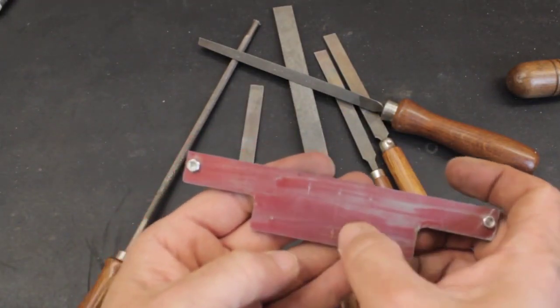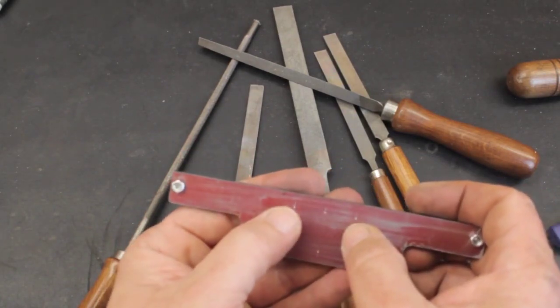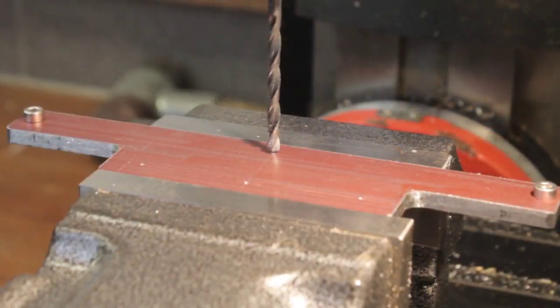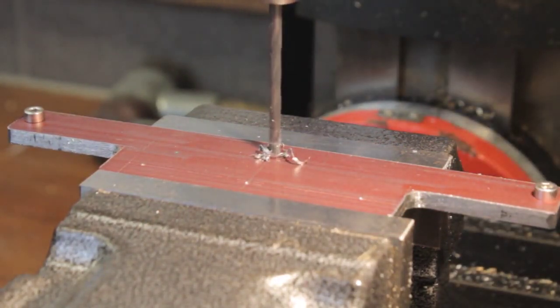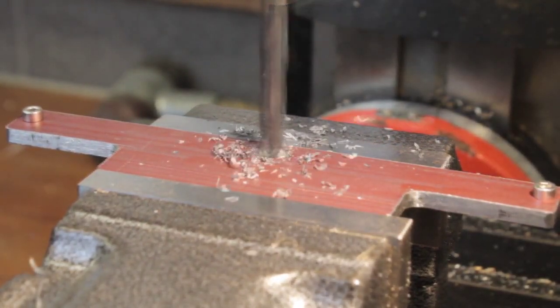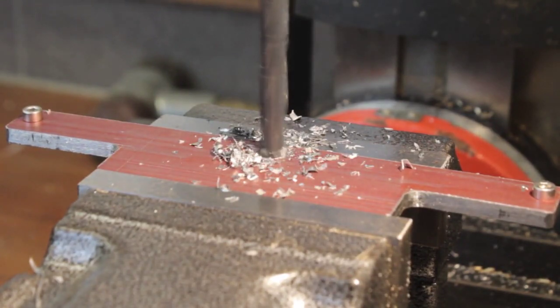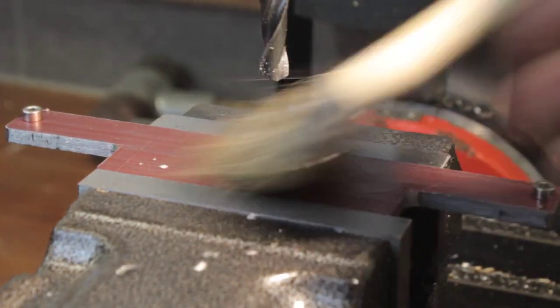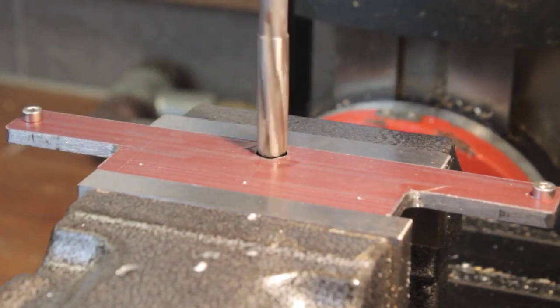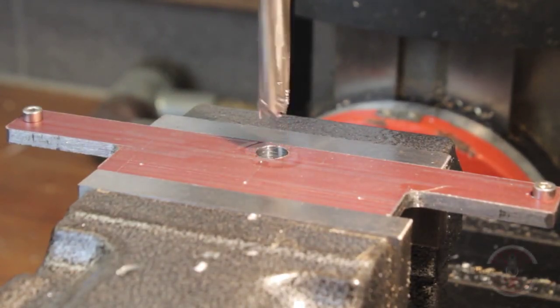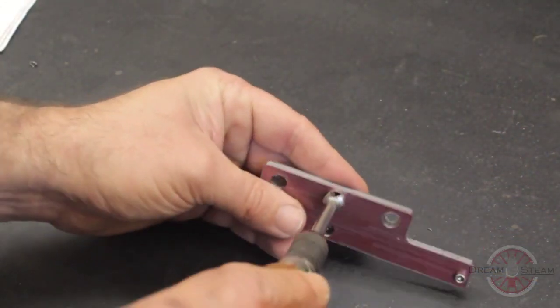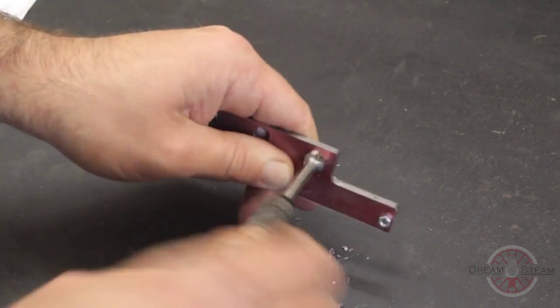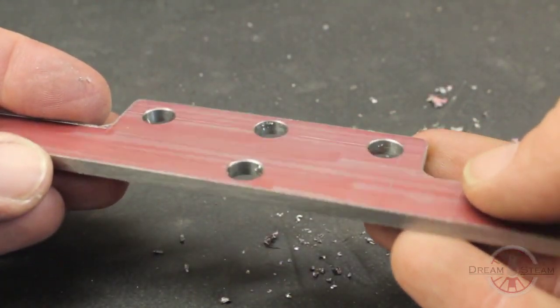Now it's time to drill the holes for the axles. The filed edges give me a good reference for the drill press. After drilling, reaming, and deburring, it's time to clean up the parts.